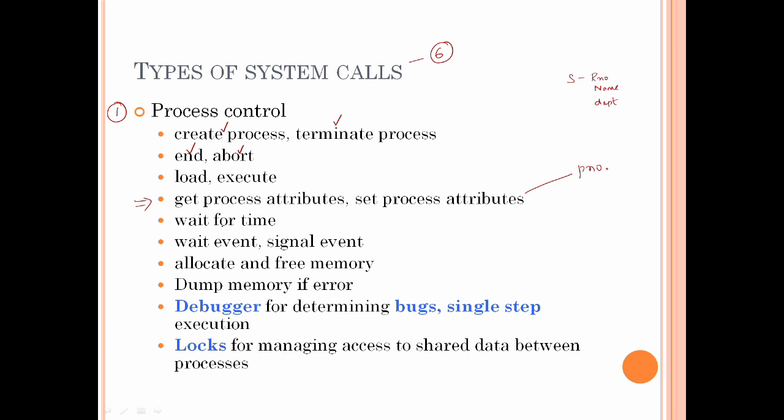Next is wait. If you want to wait for a process, that is the wait system call — wait for a specific amount of time. Then wait event and signal event. Wait event waits for a specific event. Signal event: if you type 10 characters on the keyboard, you get a signal — that is a signal event.